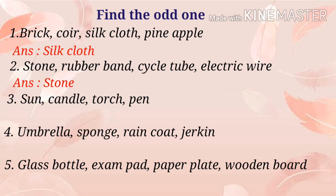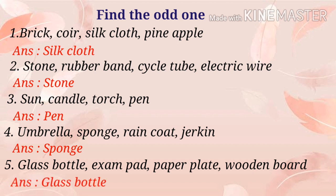Third one: sun, candle, torch, pen — the answer is pen, because the remaining three are light sources and pen is not. Fourth one: umbrella, sponge, raincoat, jerkin — the answer is sponge, because the remaining three are waterproof materials but sponge absorbs water. Fifth one: glass bottle, exam pad, paper plate, wooden board — the answer is glass bottle, because the remaining three are opaque objects and glass bottle alone is a transparent object.